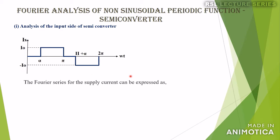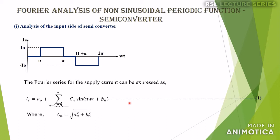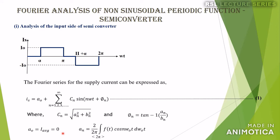The general expression for the Fourier series is: IS equals A0 plus summation from n equals 1, 2, 3 and so on to infinity of Cn sin(n·omega·t + phi_n), where Cn equals the square root of An squared plus Bn squared, and phi_n equals tan inverse of An by Bn. Here A0 is the average value; since both positive and negative half cycles are symmetrical, A0 equals zero. An is given by (2/2pi) integral of f(t) cos(n·omega0·t) d(omega0·t), and Bn is given by (2/2pi) integral of f(t) sin(n·omega0·t) d(omega0·t). We will derive An and Bn one by one.